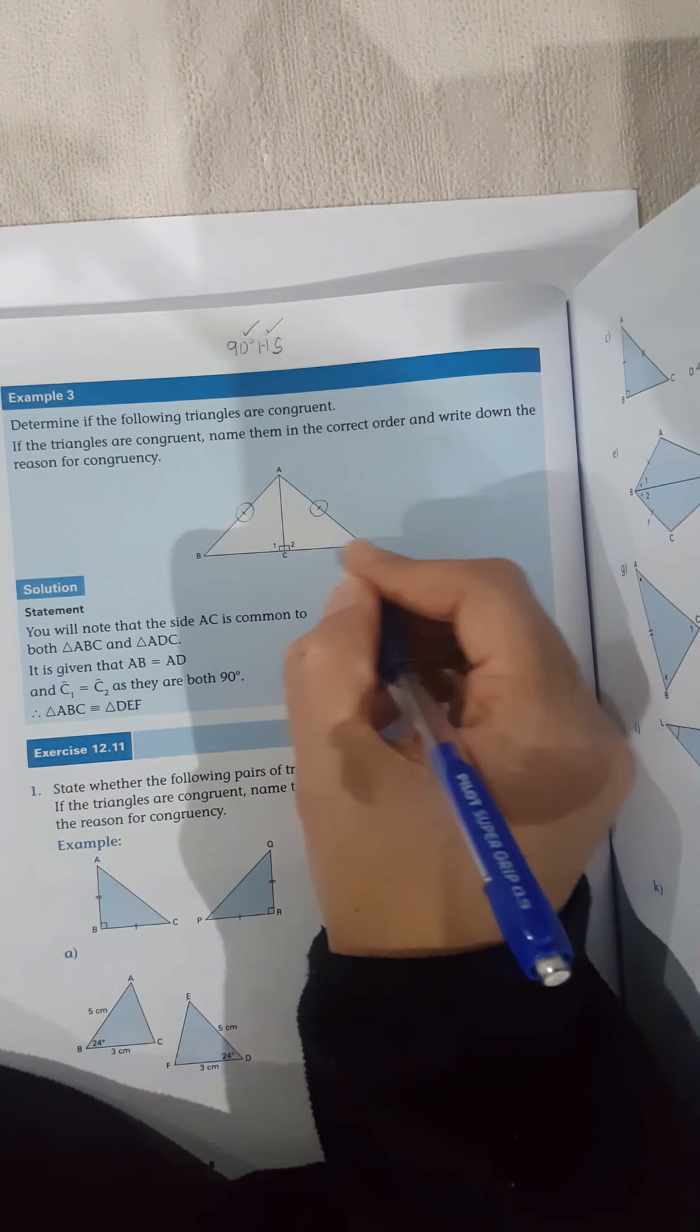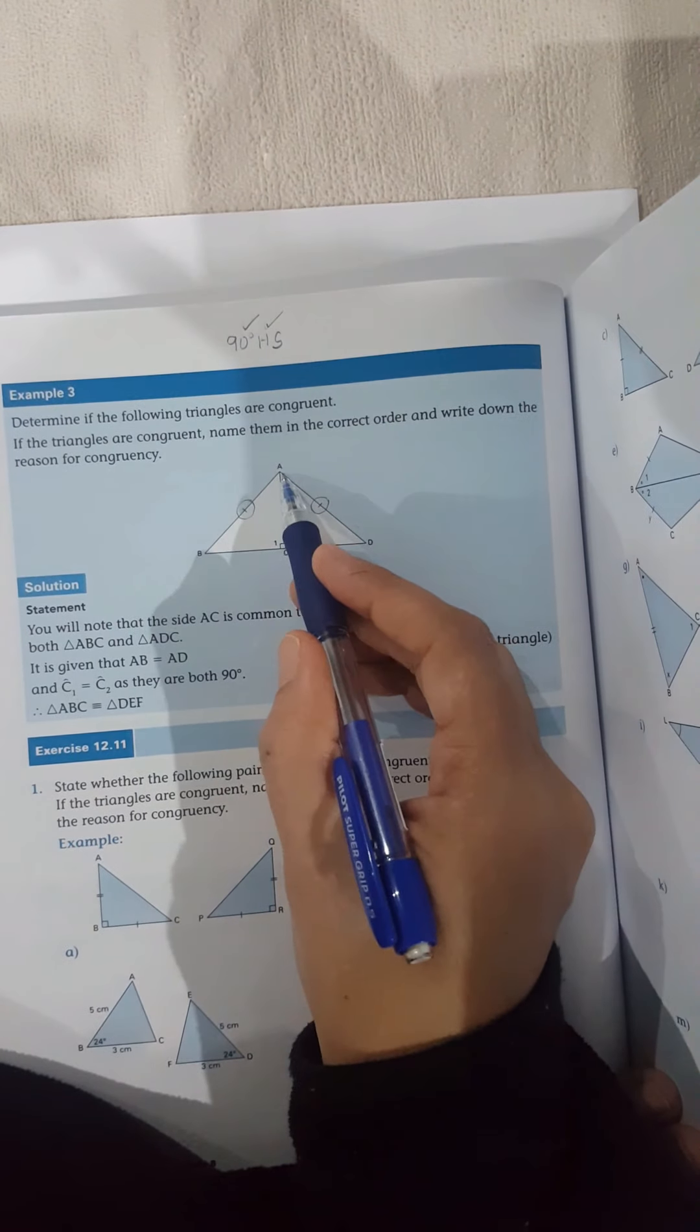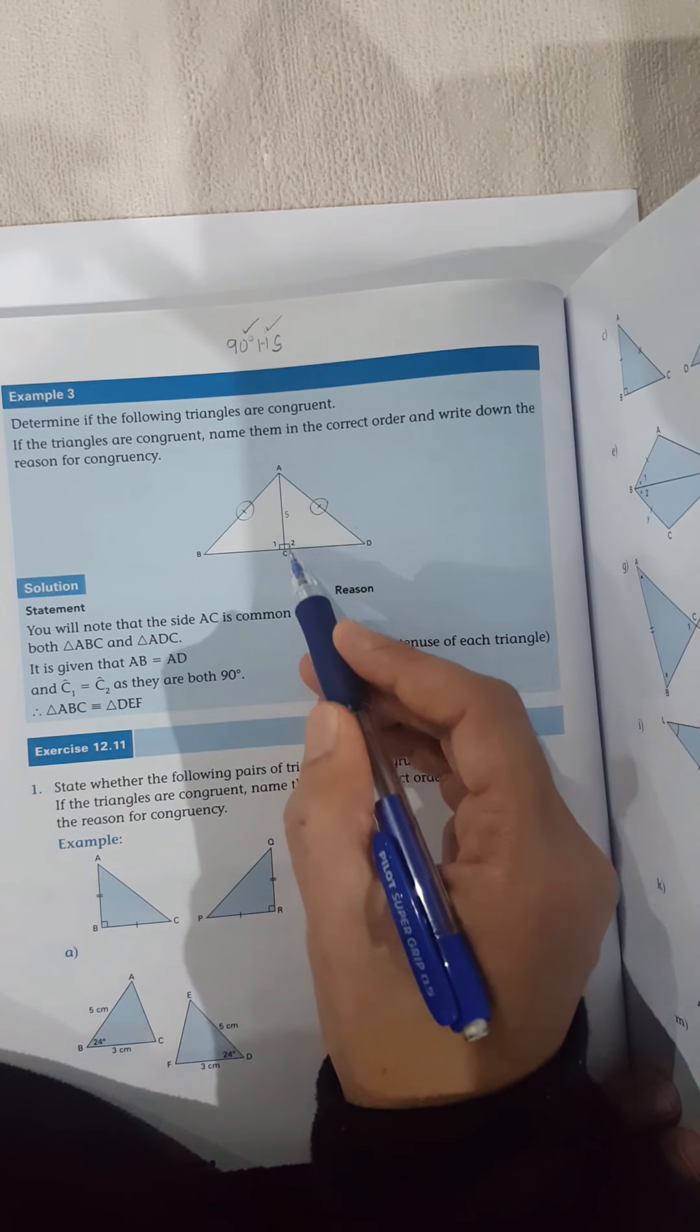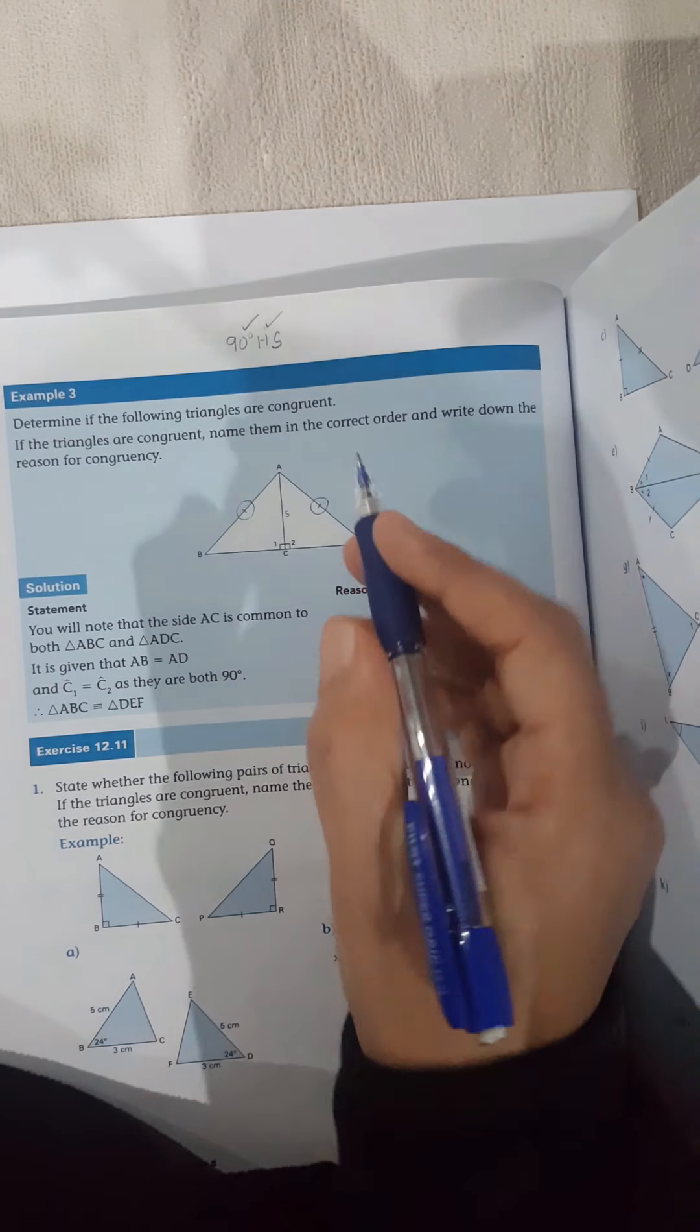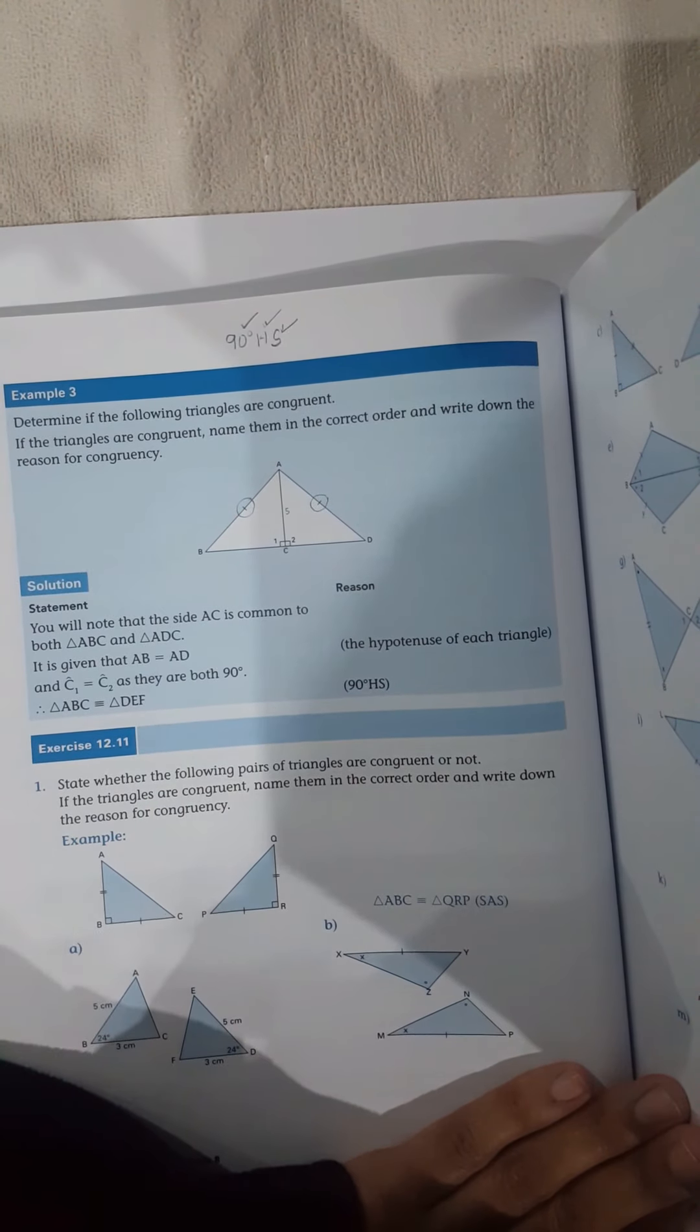So look at here, this triangle has, say for instance, that this measures 5. I have AC in this triangle and I've got AC in that triangle, which gives me my equal side. So have I proven my congruency? Yes, I have.